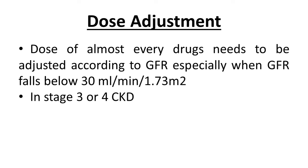Doses of almost every drug need to be adjusted according to GFR, especially when GFR falls below 30 ml per minute per 1.73 meter square. In any patient believed to have stage 3 or 4 chronic kidney disease, nephrotoxic drugs should either not be started, or if they are inevitable, their dose must be adjusted according to GFR. Adjustment guidelines are given in all standard pharmacology and therapeutic textbooks.